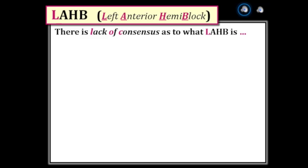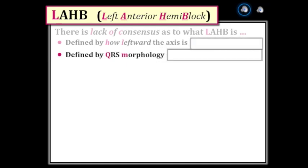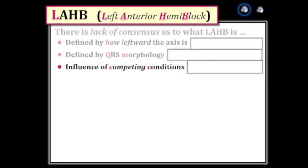Even among experienced interpreters, there is no consensus on how to define left anterior hemiblock. Some define it by a certain amount of left axis deviation — the numbers most often cited being an axis more negative than minus 30, minus 45, or minus 60 degrees. A better definition incorporates QRS morphology: with pure left anterior hemiblock there should be a small Q wave with tall R wave in lead I, and the opposite pattern — small R wave with deep S wave — in leads II and III. Many patients, however, have associated competing conditions such as prior infarction or cardiomyopathy.